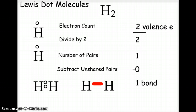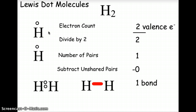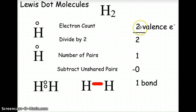Let's start with the most simplistic of molecules, the diatomic molecule for hydrogen, H2. The first thing we need to know is what the atom looks like and how many electrons are available in the valence shell. For hydrogen, that's pretty simple because it's 1s1 — there's only one electron available. But there are two hydrogen atoms involved in this molecule, so the electron count is two. We divide the valence electrons by two to see how many pairs of electrons are involved.